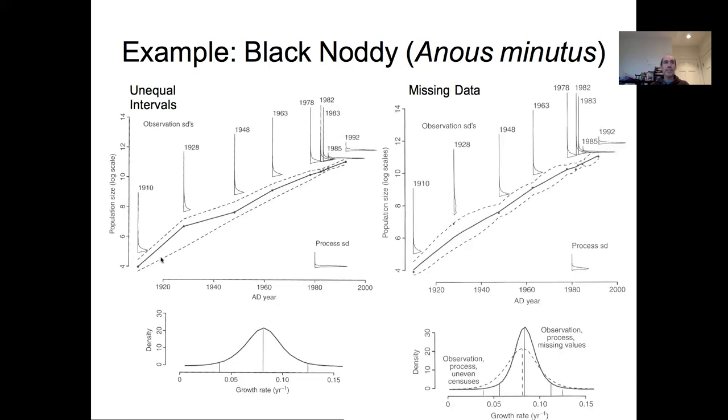We can contrast that example where we modeled the unequal intervals explicitly to an approach where we just treated all these intermediate years as missing data. We can see we do get an explicit estimate for the states in between, and we have this balloon-shaped interval estimates.